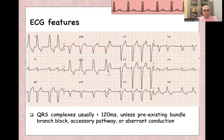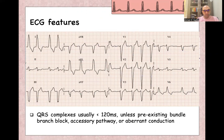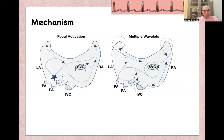Like in this ECG, here — this is atrial fibrillation with wide complex, either a bundle branch block, or accessory pathway, or aberrant conduction.